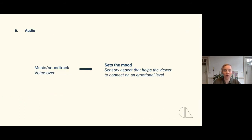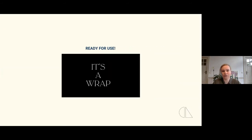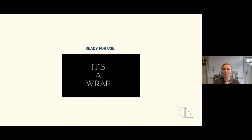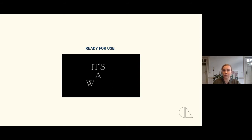When all of that is done we have one final thing to do — work with the audio. We have to pick the right voice for our narrator and pick music or a soundtrack that really helps set the mood for the video. Audio is one of those sensory aspects that really helps the viewer get into the right mood — for example, a horror movie would not be half as scary if you took the music away. After that the video is ready to be used, whether it's on a website, screened in a meeting, or posted on social media. And that's how we create these animated videos.